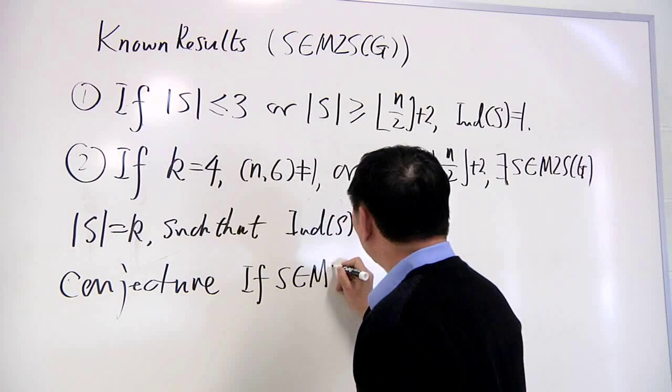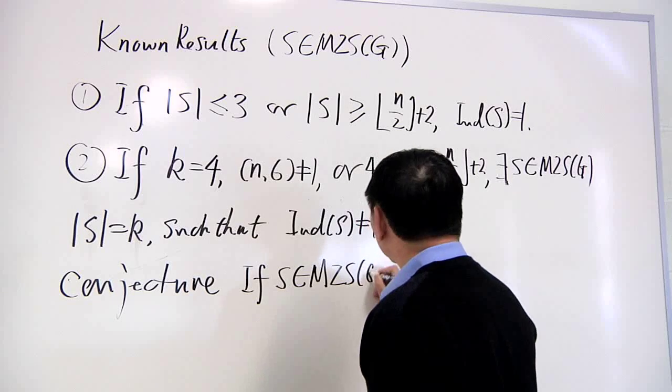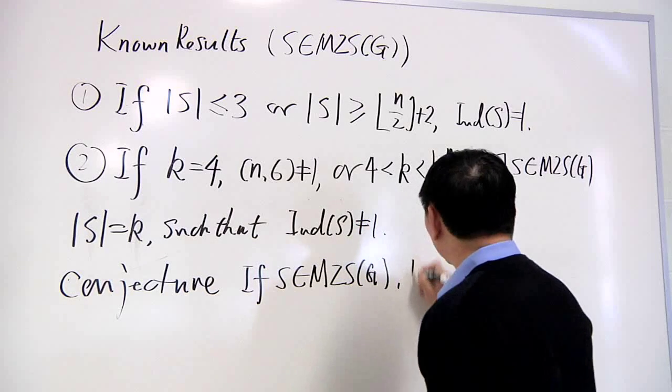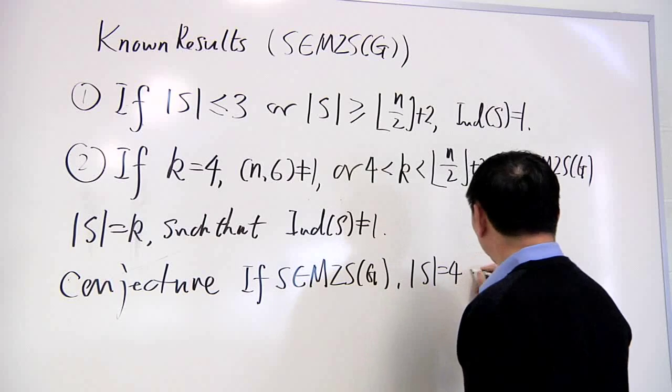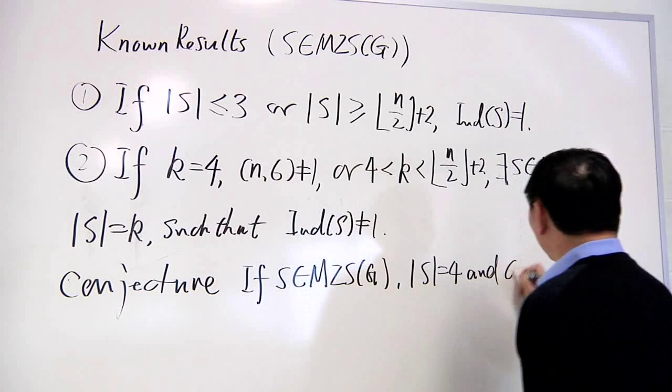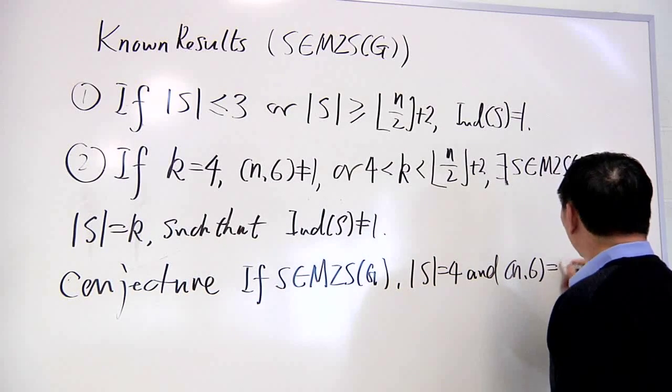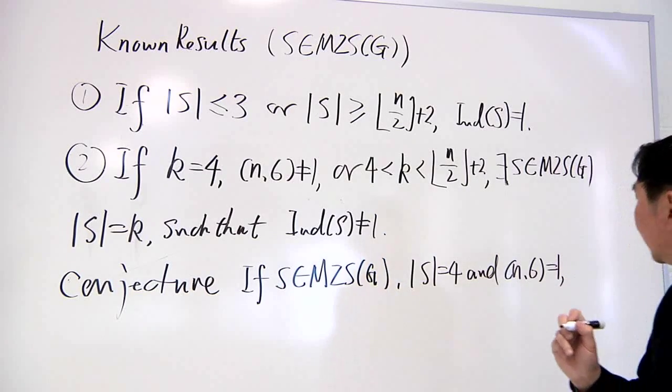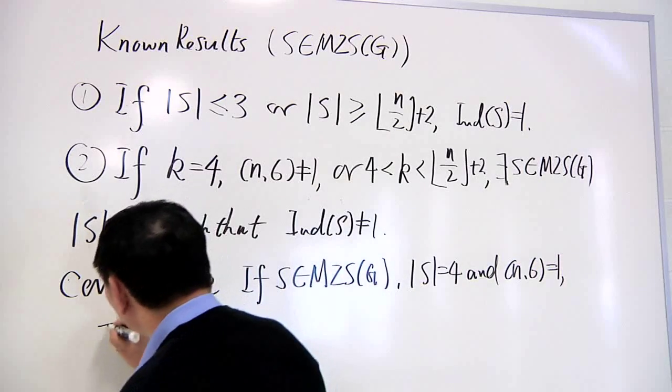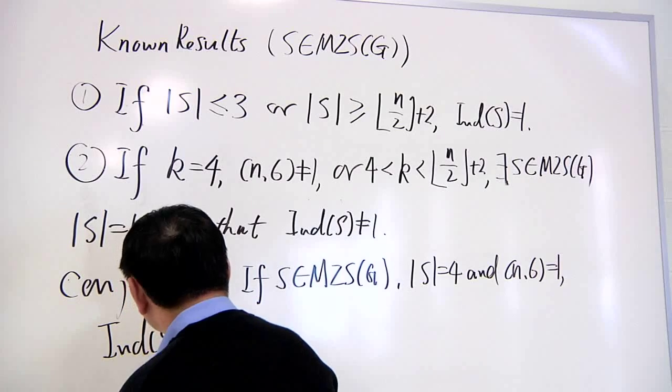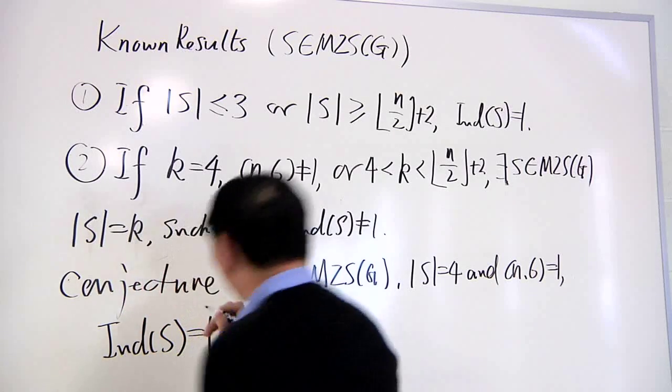If s is a minimal zero-sum sequence of length 4, and n and 6 are co-prime, then in this situation, the index of such a sequence must be 1.